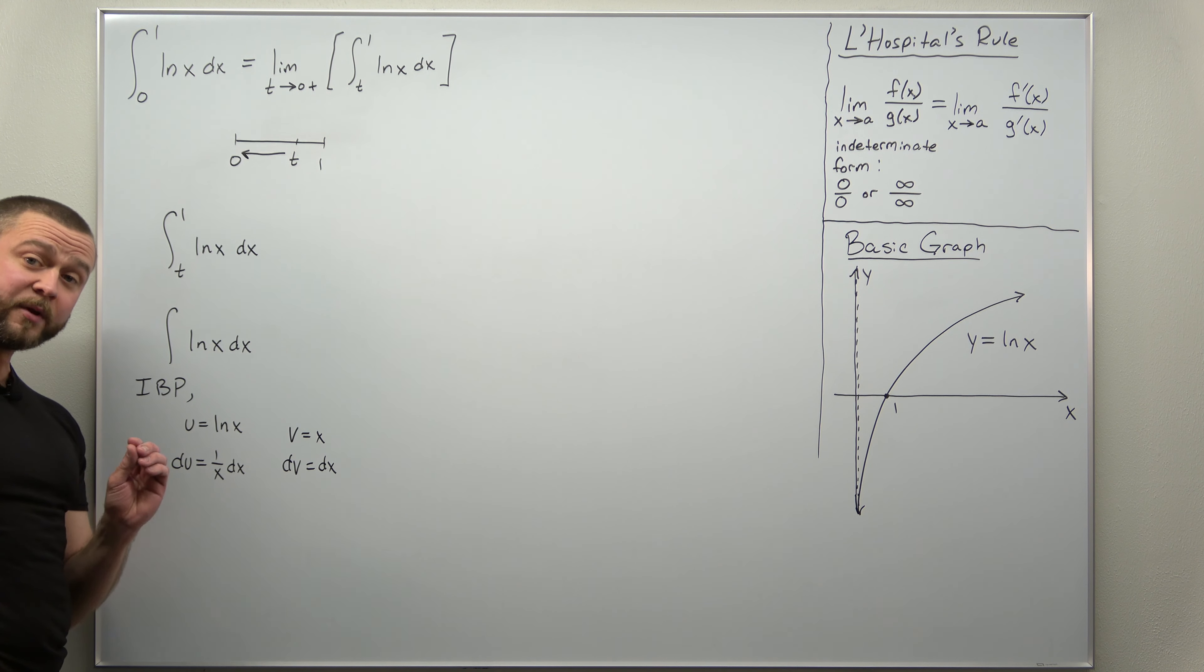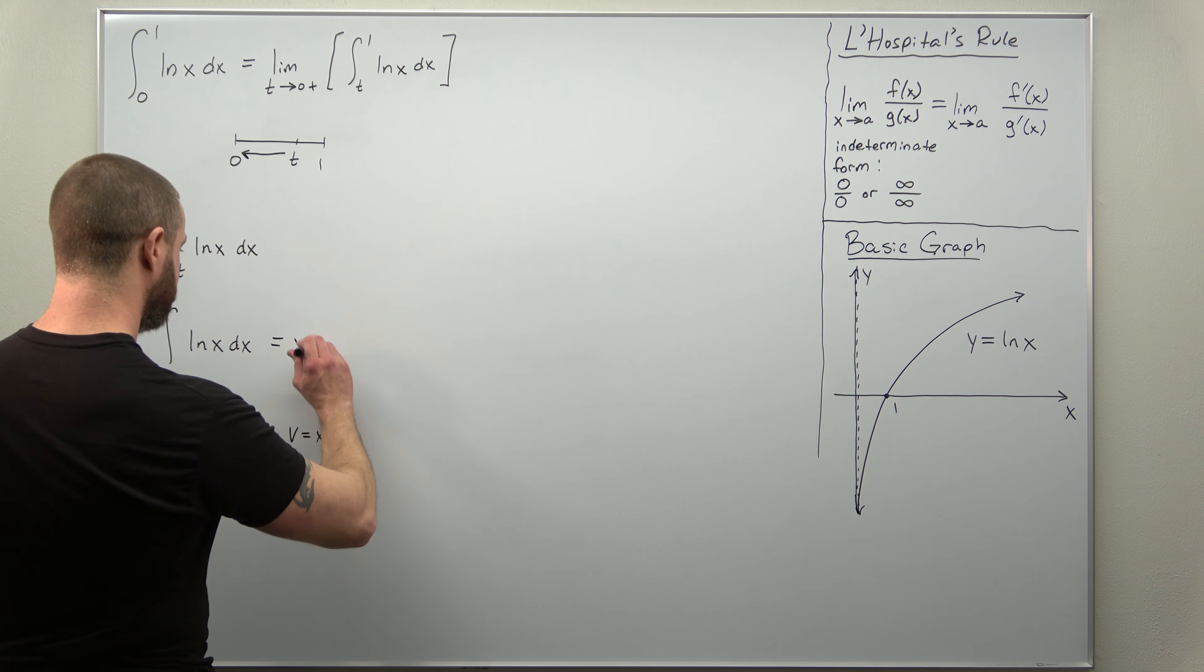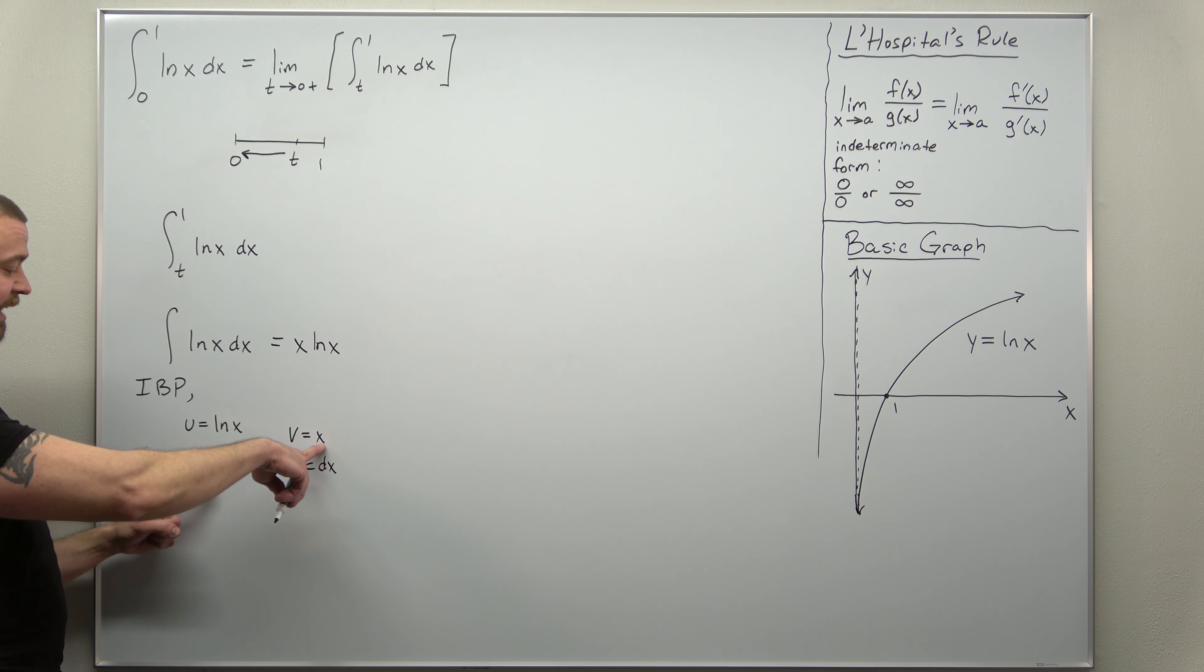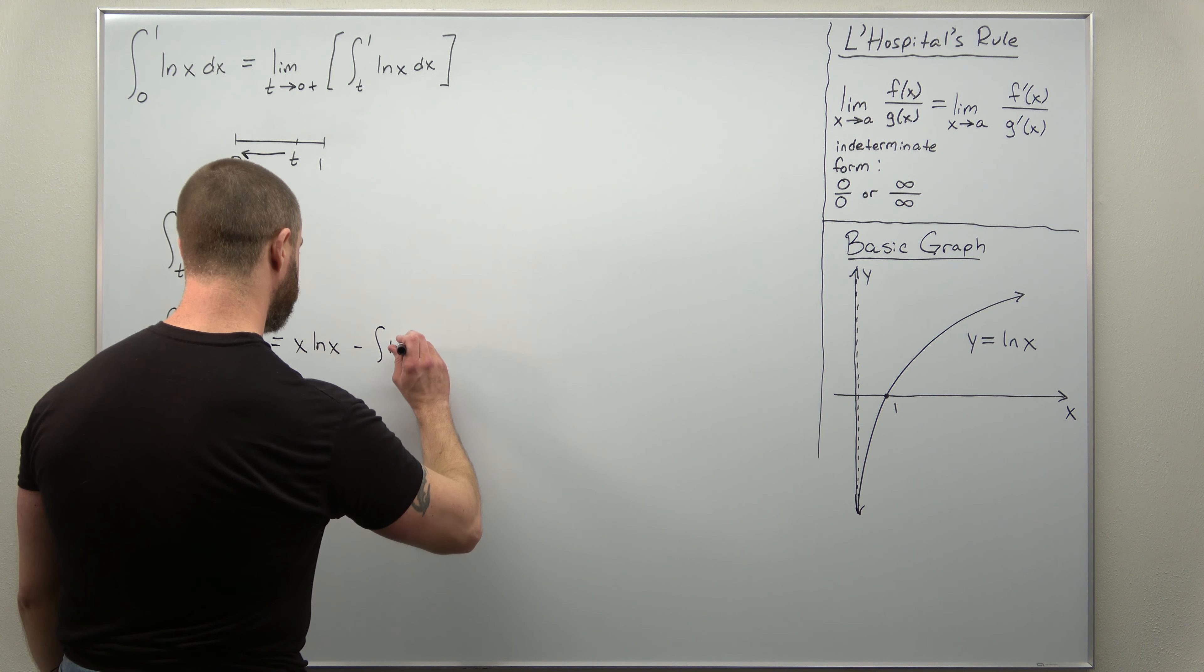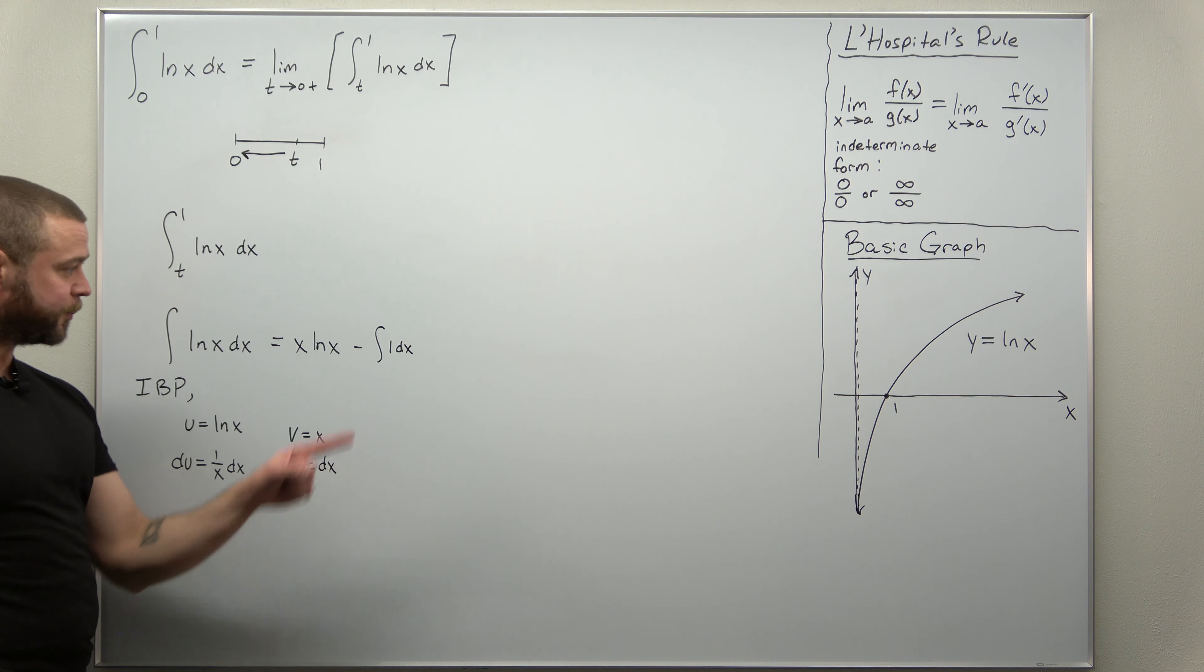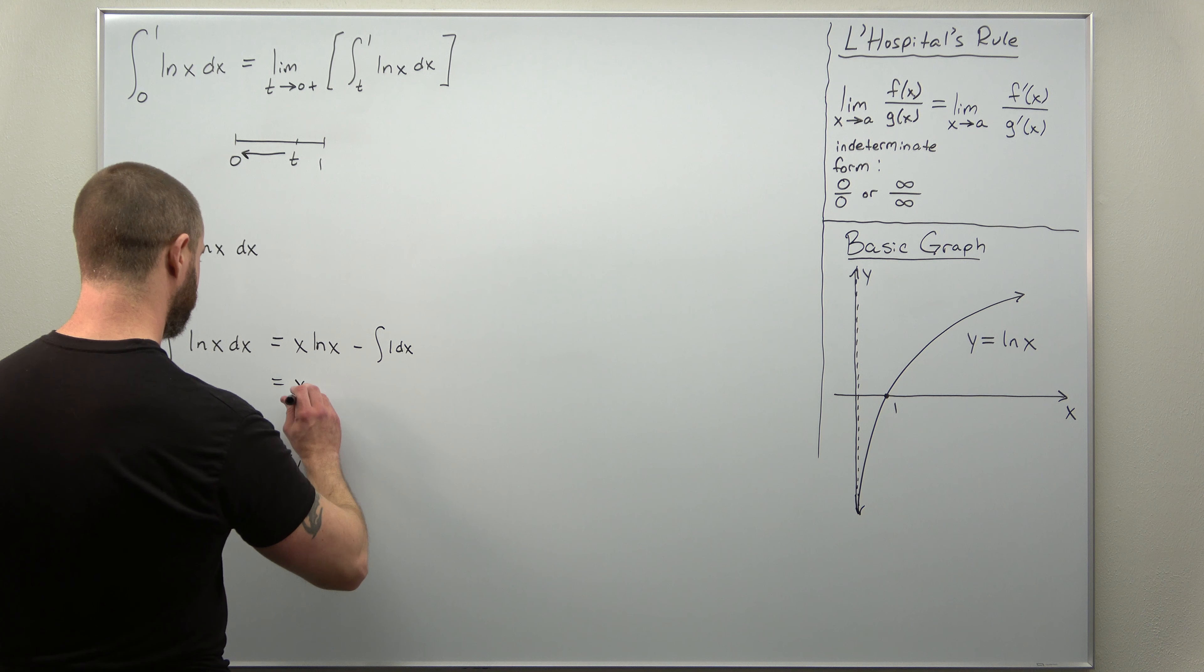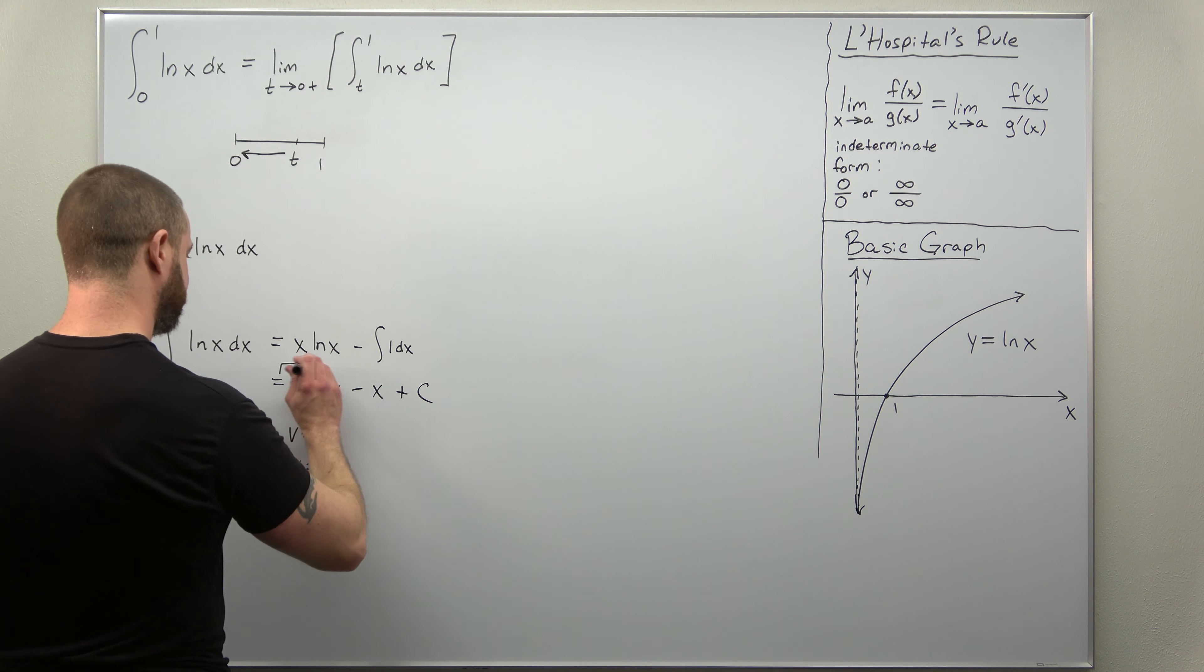All right, we have everything here that we need to apply our integration by parts formula. We get uv: x times natural log of x. And now minus the integral of v du. Notice x and 1 over x cancel out. So we just get minus the integral of 1 dx. And that's very simple. We actually already used that here. Integrate 1, you should just get x. So our antiderivative: